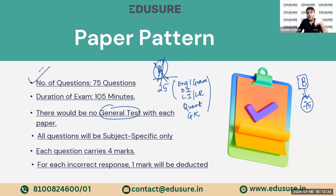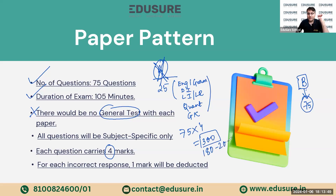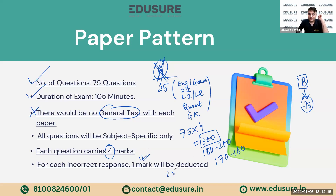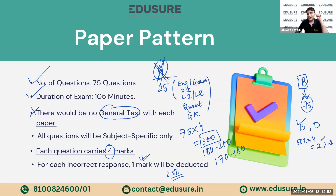There are now 75 questions and the duration has been reduced from 120 minutes to 105 minutes. All questions will be subject-specific. Each question carries four marks, so the total marks for CUET is now 300. An expected cut-off of approximately 180 to 200 should give you a shot at the Delhi School of Economics, and 170 to 180 for JNU. For each incorrect response, one mark shall be deducted — that is 25% negative marking. If you are confused between two options, take a calculated guess, because your expected score at 50% chance is 2, which is greater than the penalty of minus 1.